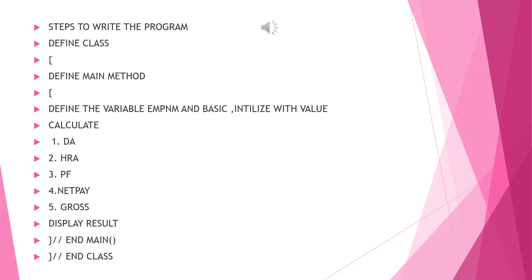I have written an algorithm for the Java program. Always try to write an algorithm before starting to write the actual Java program — it helps you write an error-free program and understand the logic and steps. The algorithm is: define the class, open curly braces, define the main method, define variables (EMP_name and basic) with static initialization, calculate DA, HRA, PF, net pay, and gross, display the results, then close curly braces of the main method and the class.